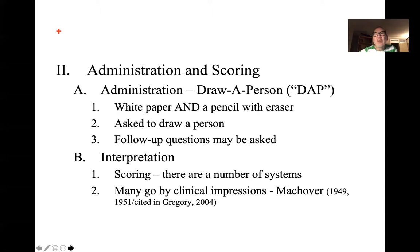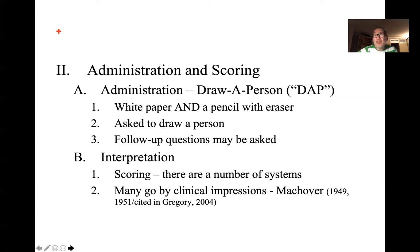The way to think about human figure drawings is kind of like art interpretation — like reading a book with the TAT, or seeing a painting with figure drawings. The idea is that when you read a book or see a painting, it gives you a window into what's going on with the author or the painter — or a sculptor, or a musician writing a song. It's art interpretation. So to the extent art interpretation is valid and tells you something about the artist, you can do the same thing with figure drawings. That's the idea.